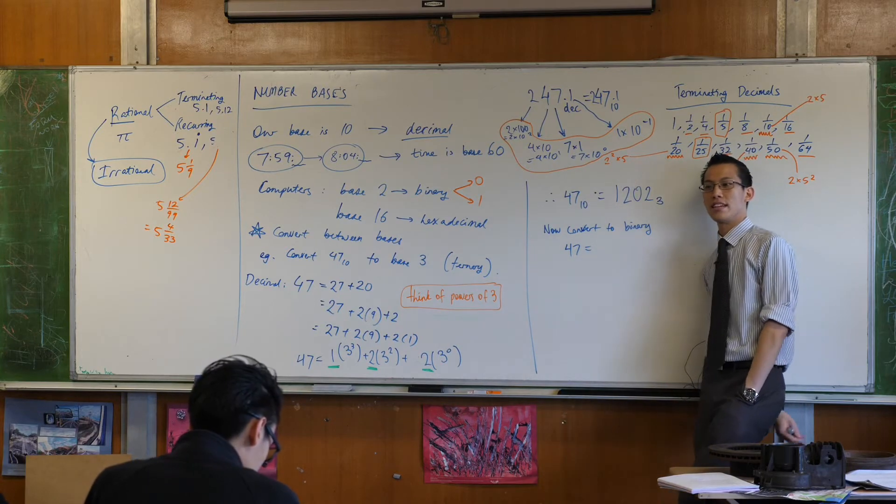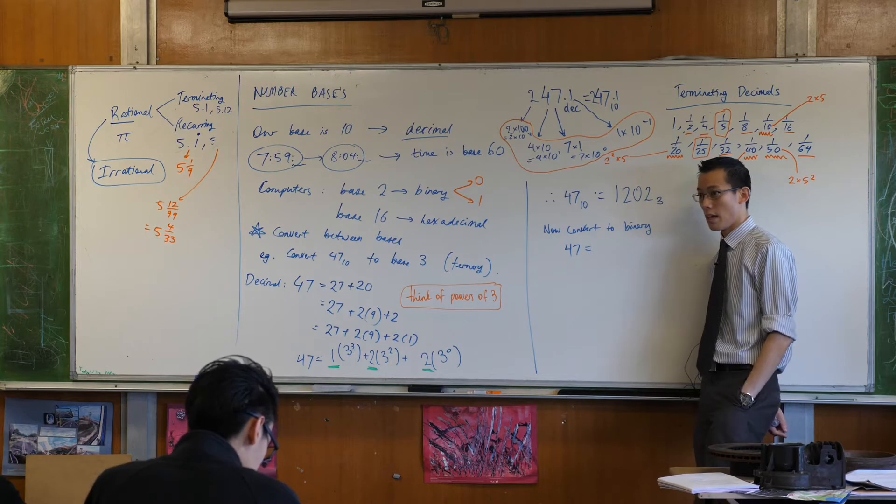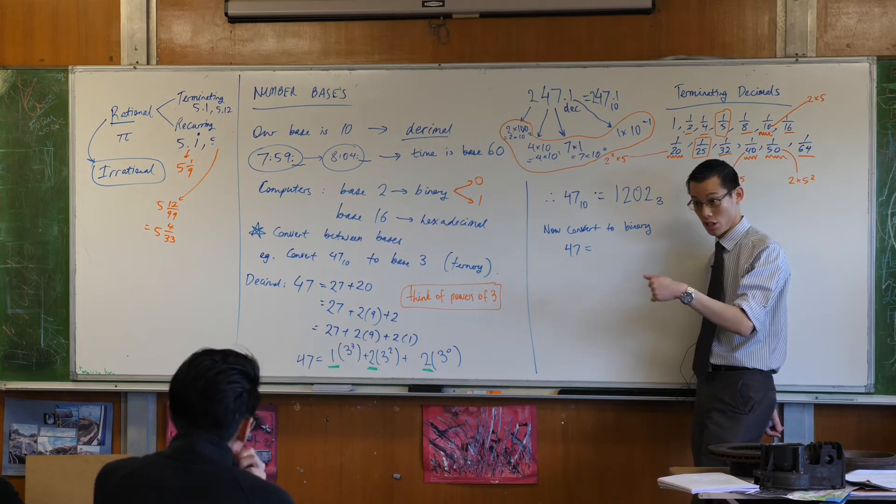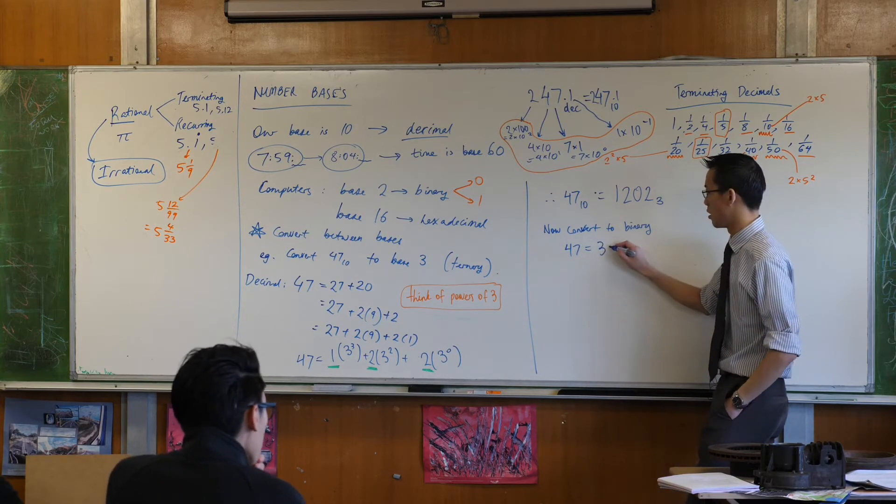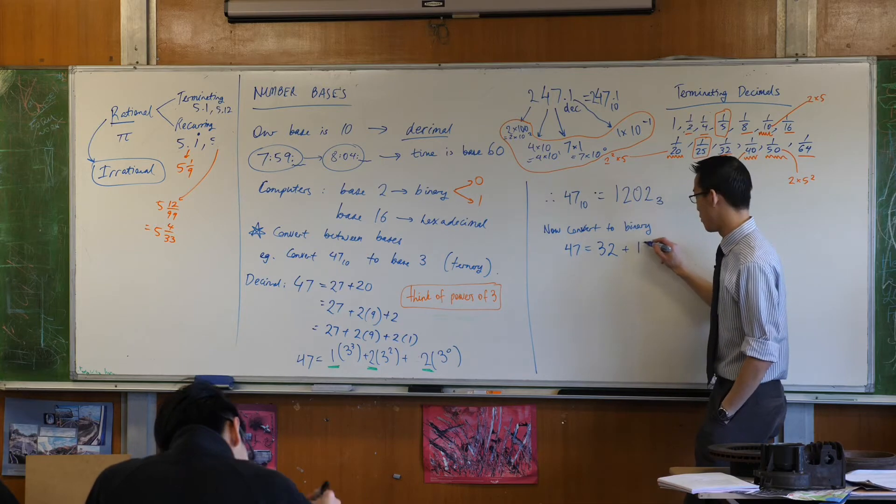What's the biggest power of 2 you can fit into 47? It's the fifth power of 2, which is 32. I've got some numbers left over. What do I have left over? 15.